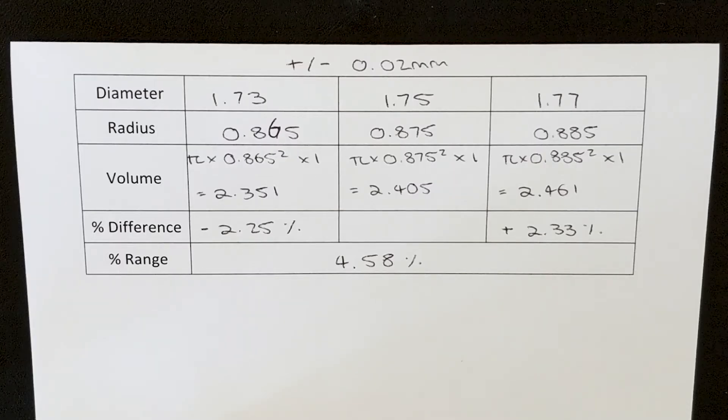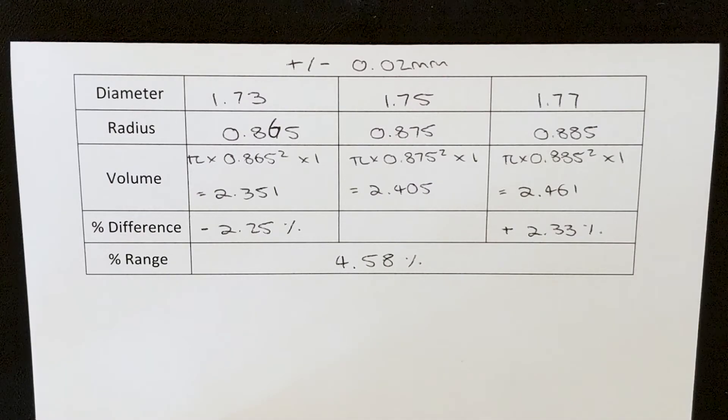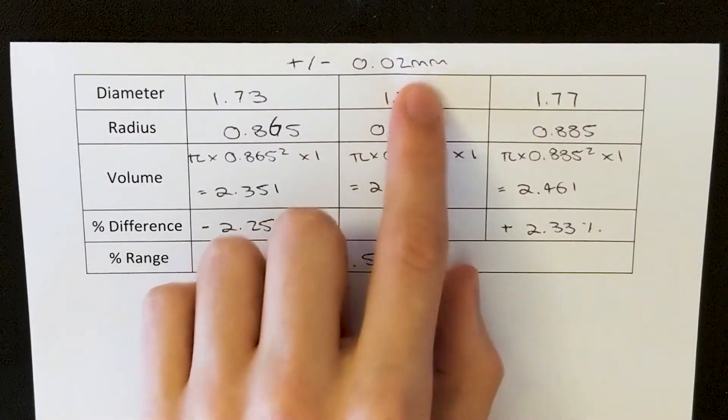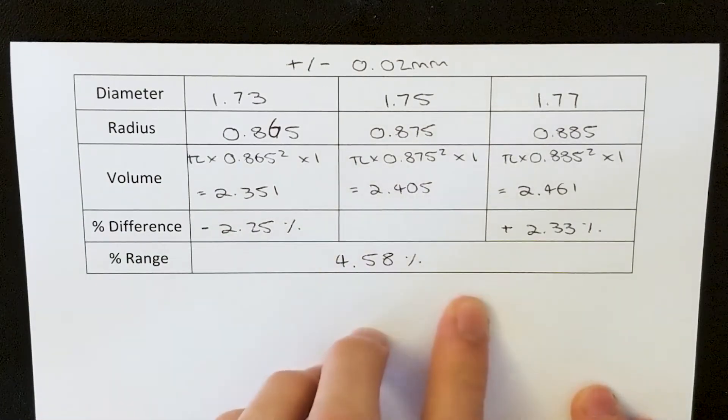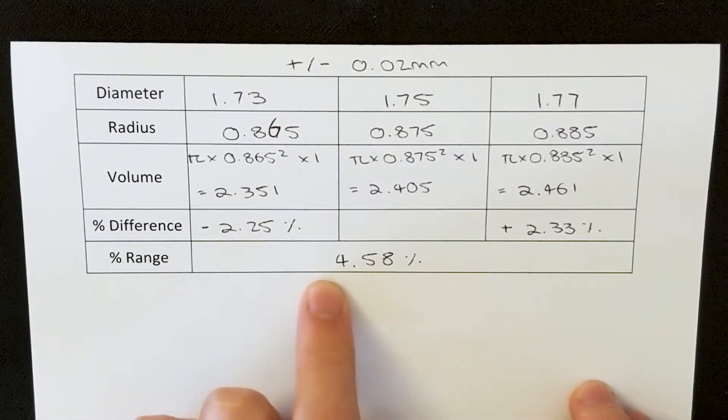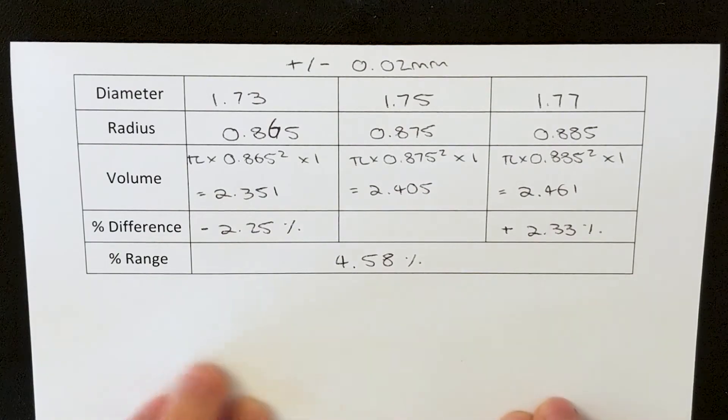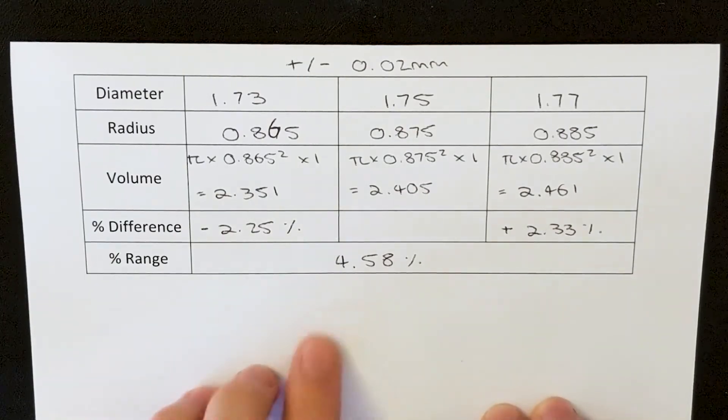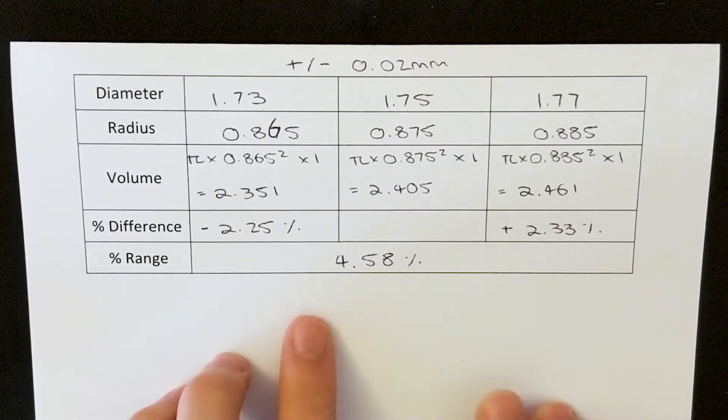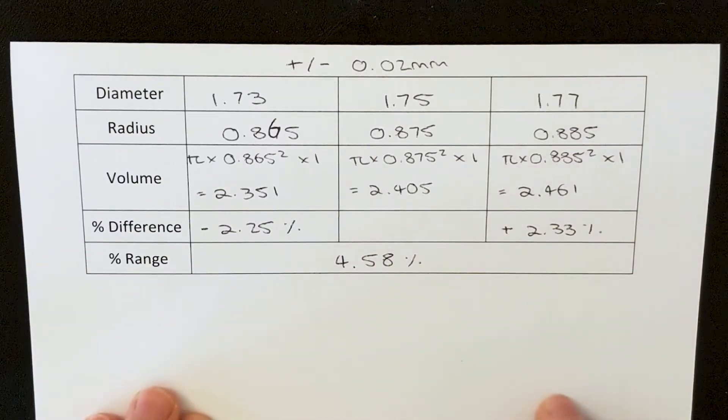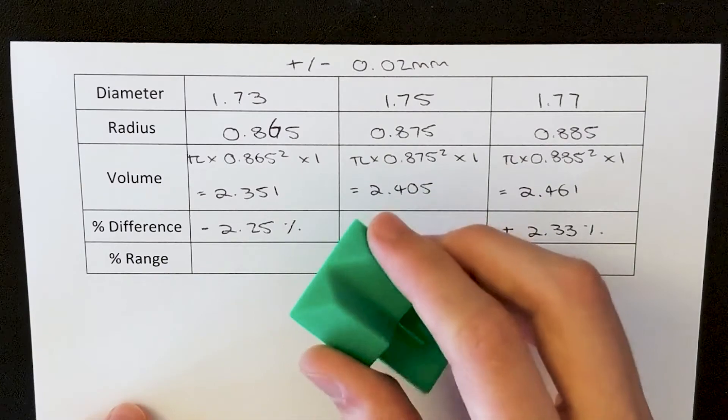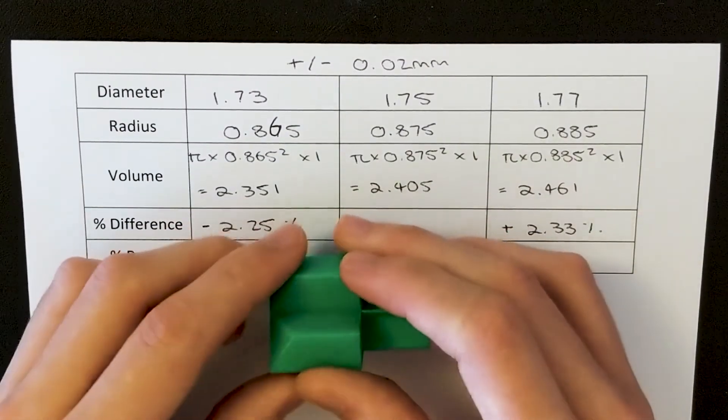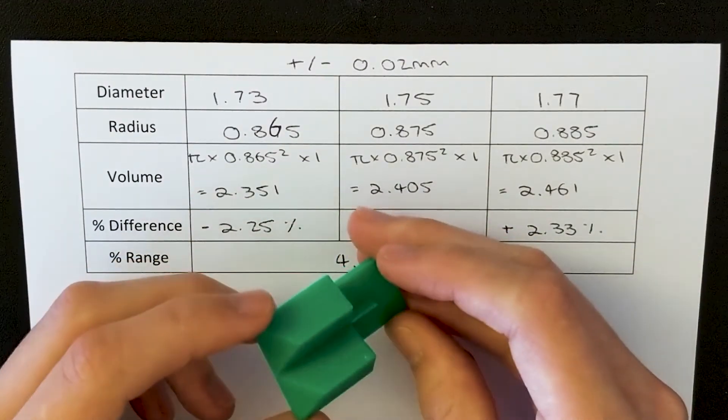So what if you've gone the extra mile and you've paid a little bit more for a filament with a tolerance of 0.02mm? Well, here's those same calculations, and as you can see, the percentage range is a lot smaller, just at 4.58%. So that means, in the most extreme case, you would only be under or overextruding by up to 4.58%. So what I'm going to do is print another one of these extruder calibration tests at 105% extrusion multiplier, and we'll see what difference that makes.